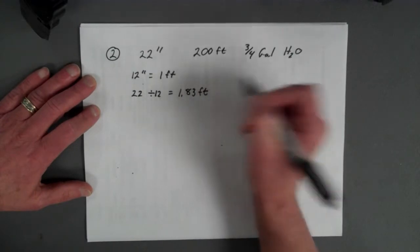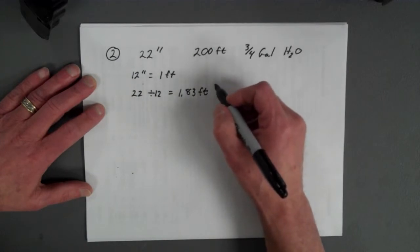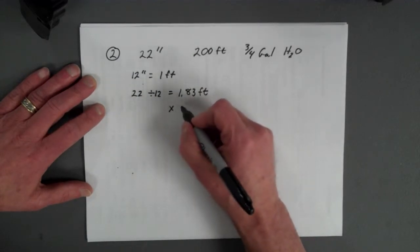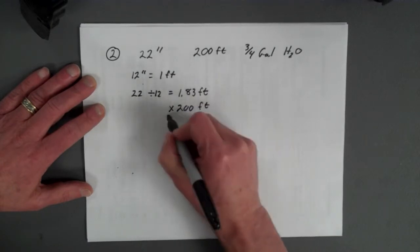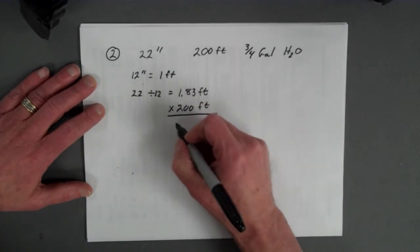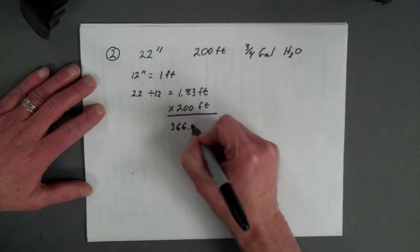So 1.83 feet there. And then you would take that times the length that you're going, 200 feet, and you end up with a total area of 366.7 square feet.